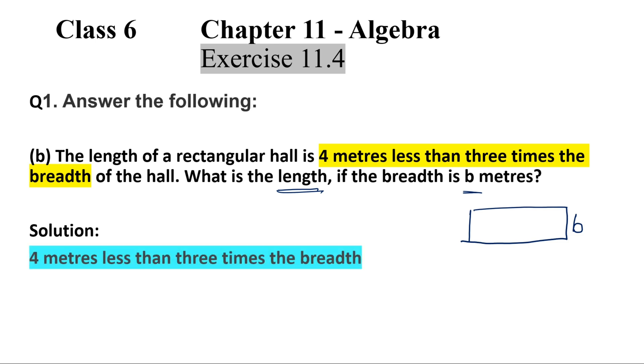And what is the length given as? 4 meters less. That means we are taking away 4. 4 meters less, that means minus 4. Sorry, we are taking away 4.